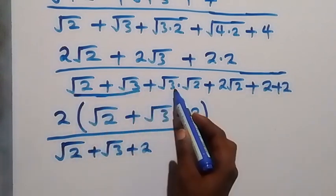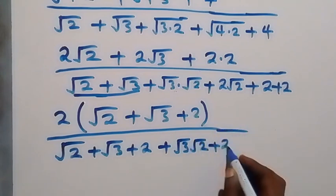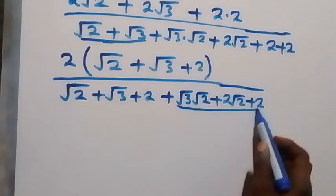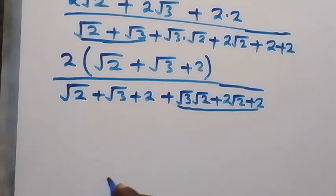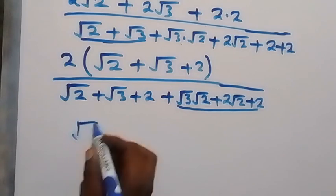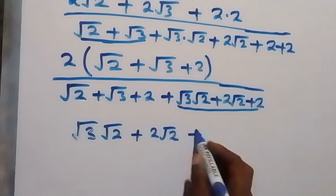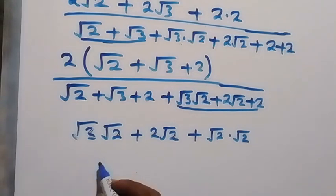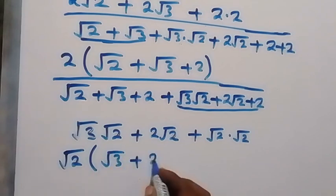We mean that the denominator includes plus root 3 times root 2, plus 2 root 2, plus root 2, plus 2, plus 2. To match the form root 2 plus root 3 plus 2, we rewrite that part as root 3 times root 2, plus 2 root 2. Instead of writing plus 2 we write it as plus root 2 times root 2, since root 2 times root 2 equals 2. We then bring out the common root 2, giving root 2 into bracket (root 3 plus 2 plus root 2).